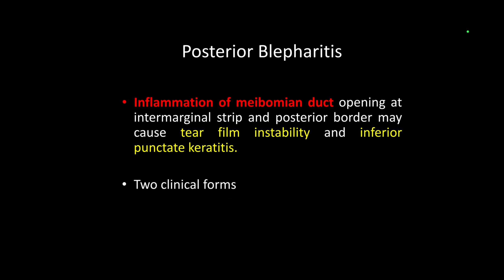Now comes posterior blepharitis. It is inflammation of the meibomian duct opening at the intermarginal strip, which results in tear film instability. If we compare anterior and posterior blepharitis, most of the tear film instability will be in posterior blepharitis. Why? Because it is affecting the meibomian gland. If the meibomian gland is affected, the lipid layer of the tear film will not be properly formed, so the tear film will evaporate more. The lipid layer prevents the tear film from being evaporated.